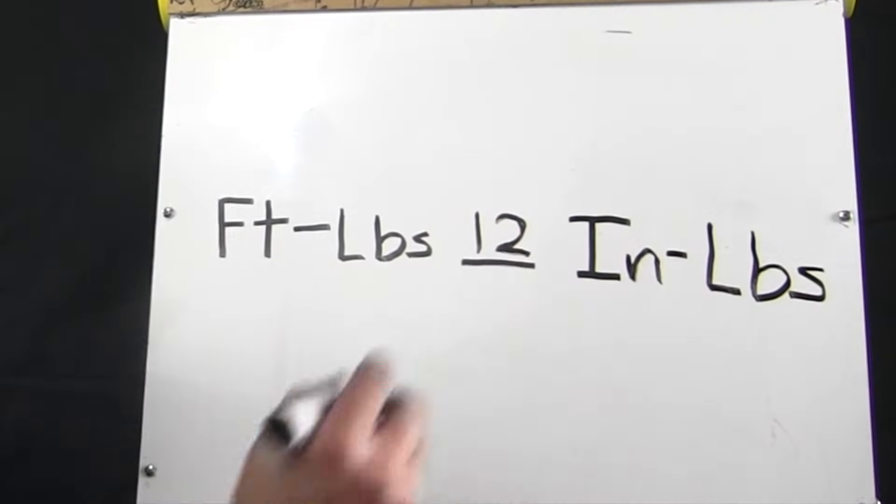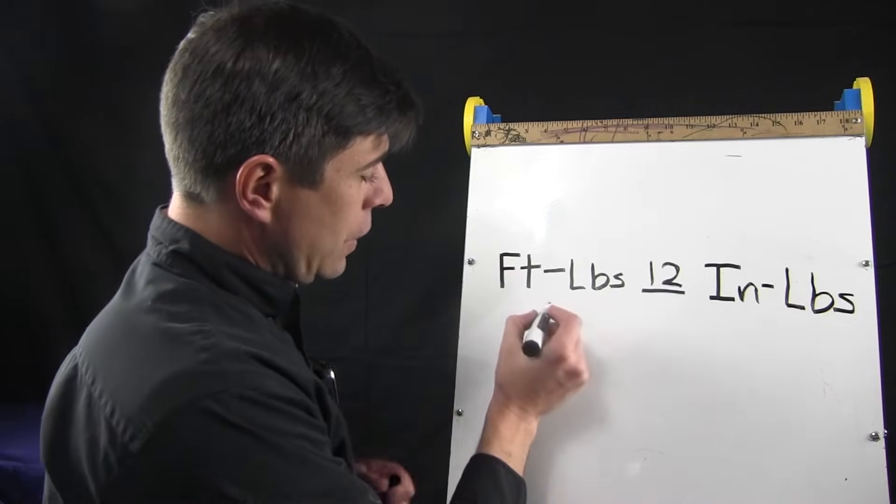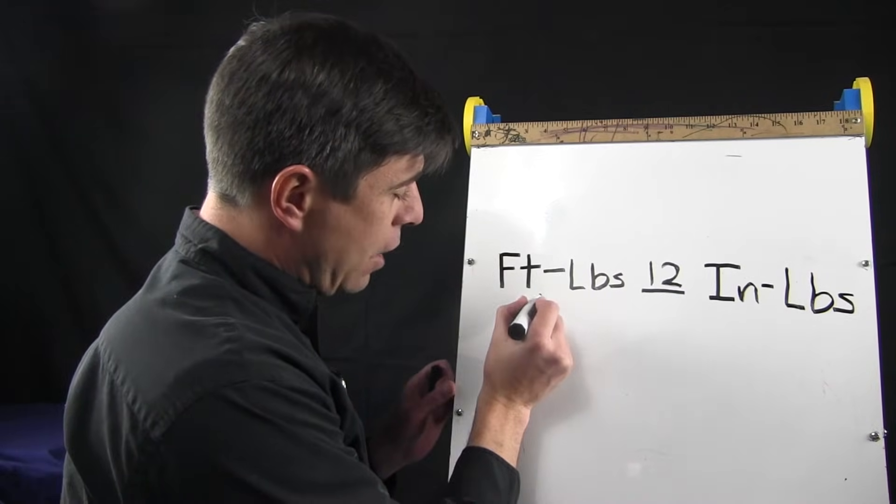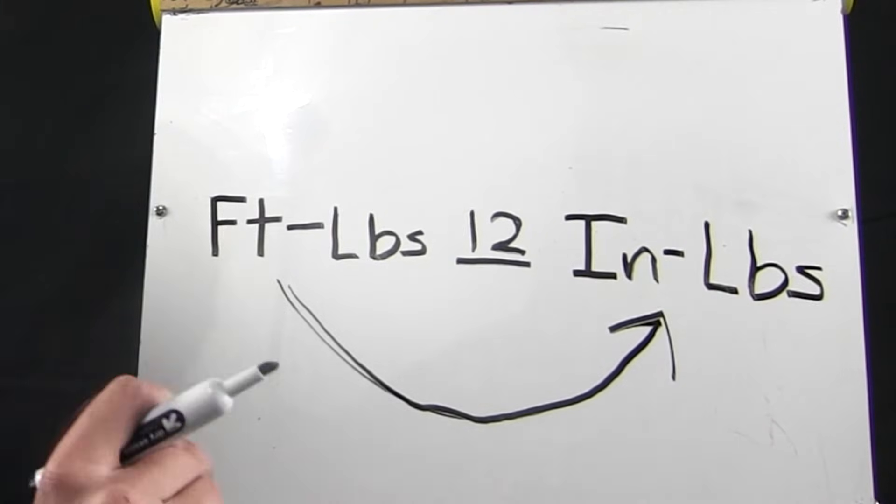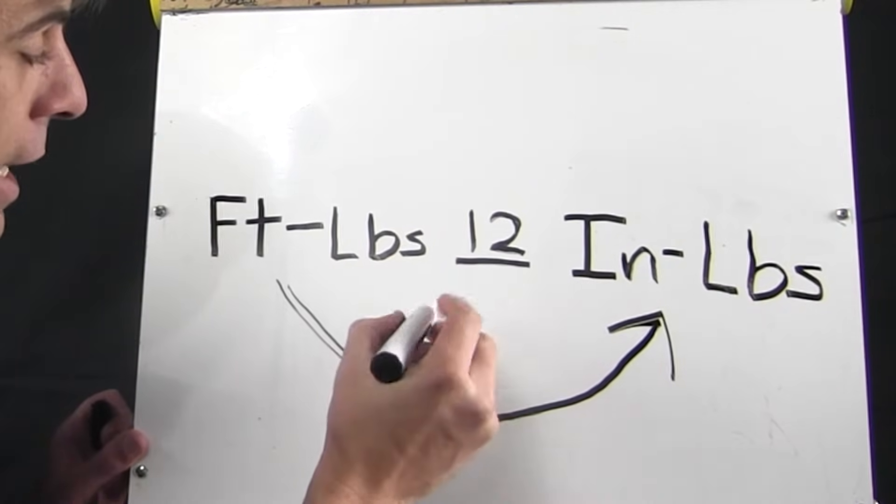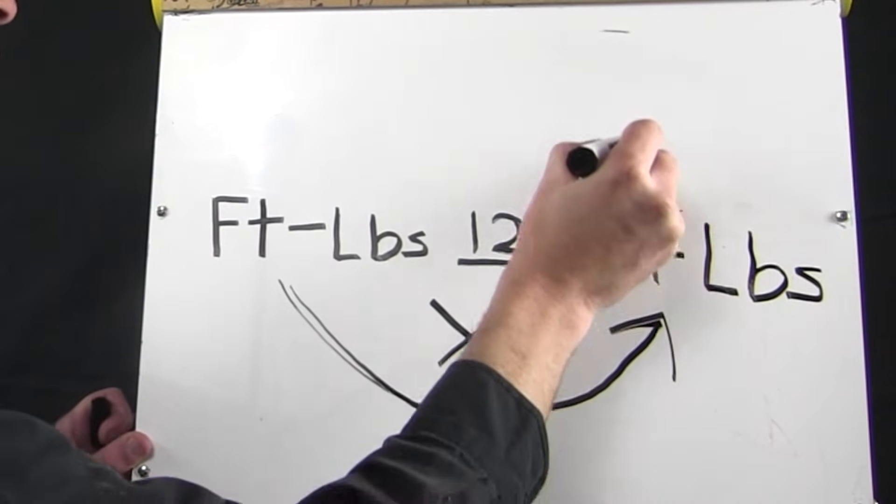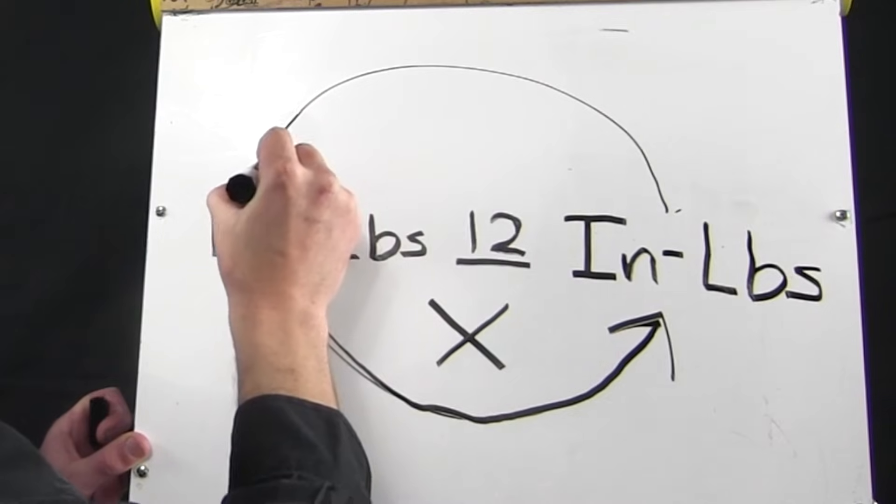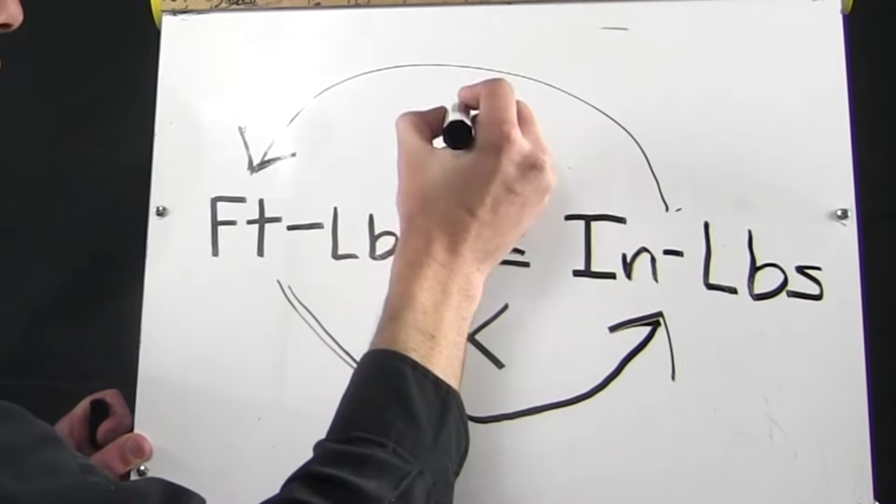There's 12 inches in a foot, and that's why it's the constant. When you're going foot-pounds to inch-pounds, you always want to multiply. When you're going inch-pounds to foot-pounds, you always want to divide.